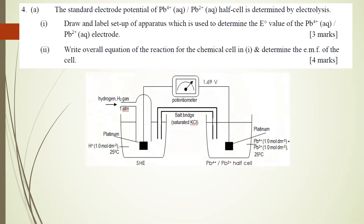This is how you draw the setup of the apparatus. As usual, you will need to draw the standard hydrogen electrode, and then you draw the Pb4+/Pb2+ half cell where the electrode is platinum. The Pb4+/Pb2+ concentration is 1.0 mol per dm³. The voltmeter indicates that the platinum on the lead side acts as the anode, whereas the platinum on the hydrogen side is the cathode. You must also label the salt bridge.